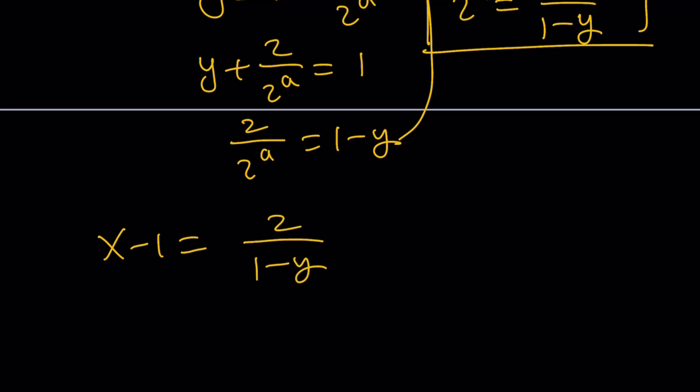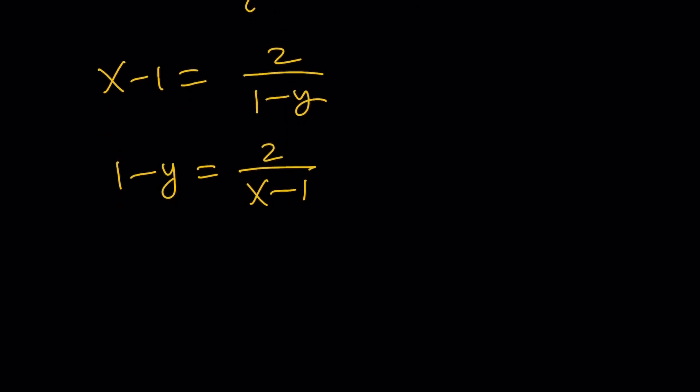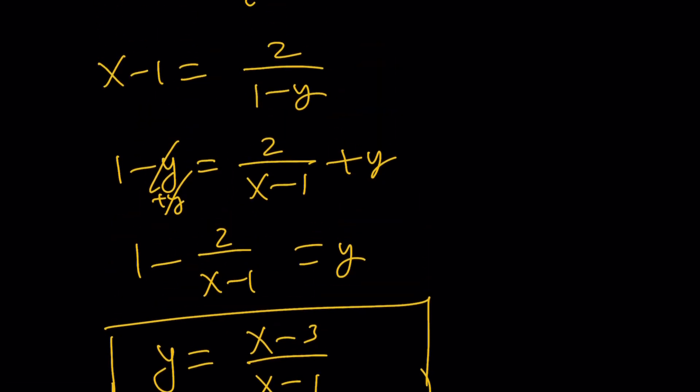Therefore, x minus 1 is the same thing as 2 over 1 minus y. Since I'm trying to solve for y, let's switch these around and write this as 1 over 1 minus y equals 2 over x minus 1. And then we can add y to both sides, cancel it out, and then subtract this and we'll arrive at the same solution. Obviously, this is going to take longer to do. It's kind of a more roundabout method to solve. But it works. So that's basically another way to approach this problem.